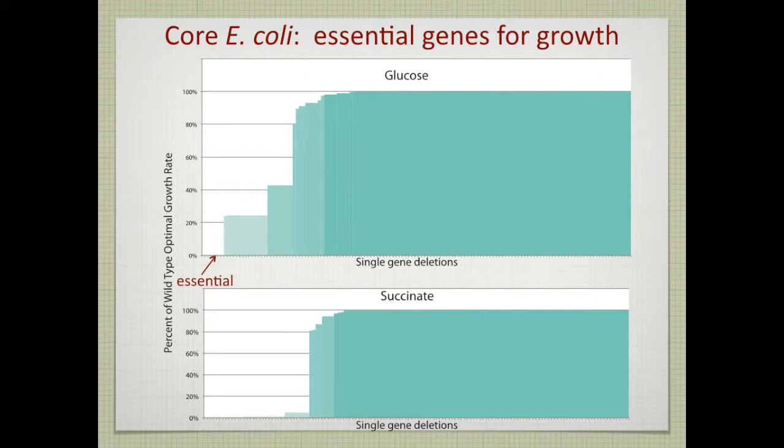First, you get zero, no growth. So those are the essential genes. So if you take them out, your model can't grow. These become predictions of gene essentiality under those conditions.